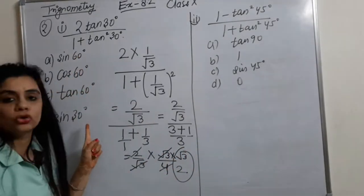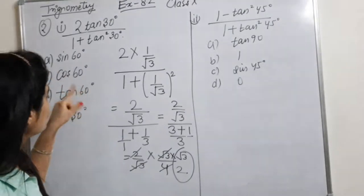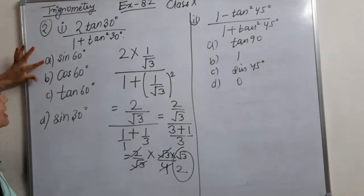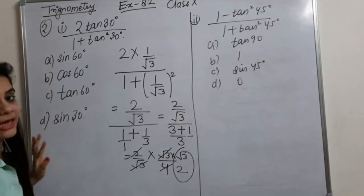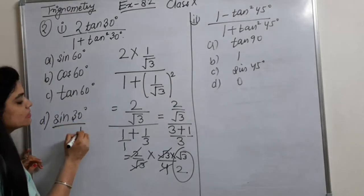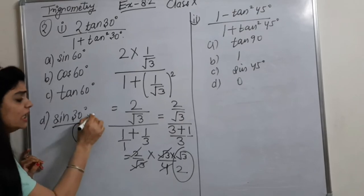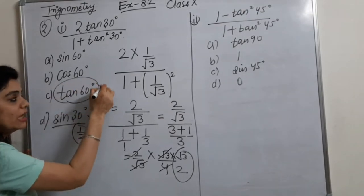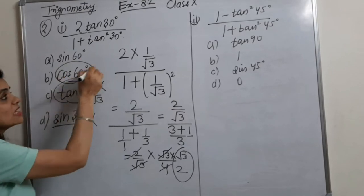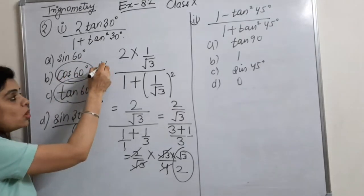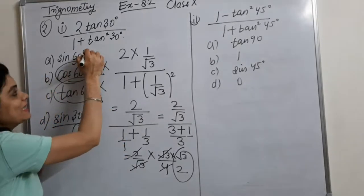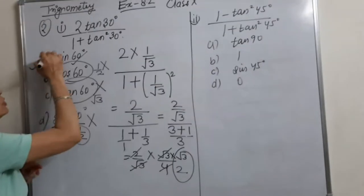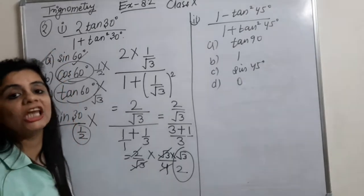But root 3 by 2 is not directly in the options, so we need to see which trigonometric value equals root 3 by 2. Sin 30 is 1 by 2 — that can't be it. Tan 60 is root 3 — that can't be it. Cos 60 is 1 by 2 — also not possible. So it must be sin 60, which equals root 3 by 2. So my answer is option A.